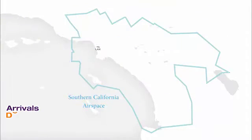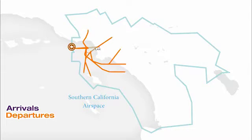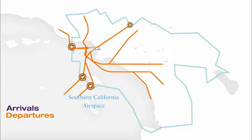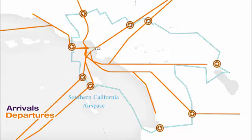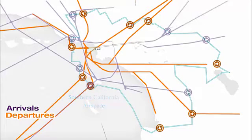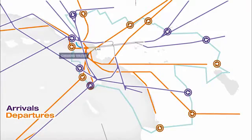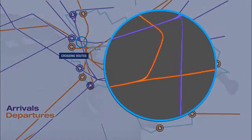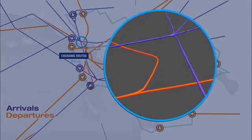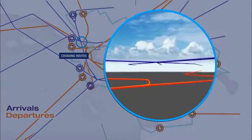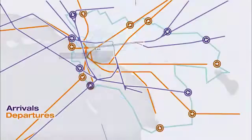LAX serves many destinations. When aircraft depart to the west, an initial heading is used, then planes fan out to specific departure routes. The departures and arrivals have numerous crossing routes where the departures must be separated from arrivals. Controllers continuously manage and separate arrivals and departures simultaneously throughout the day.